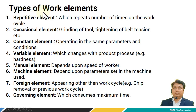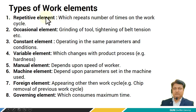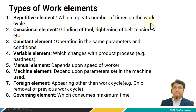Now let's see the various work elements. If we want to measure the standard time, the whole activity is divided into various elements. The types of elements are: first is the repetitive element, which repeats a number of times in the work cycle. The occasional element occurs occasionally, like grinding of tools, tightening of belt tension, etc.